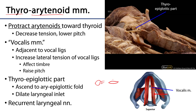There is also a thyroepiglottic part of the thyroarytenoid muscle, located between the thyroid cartilage and the epiglottis. It ascends and acts as a dilator of the laryngeal inlet, helping to pull the aryepiglottic fold slightly out of the way to let more air in. These are also innervated by the recurrent laryngeal nerves.